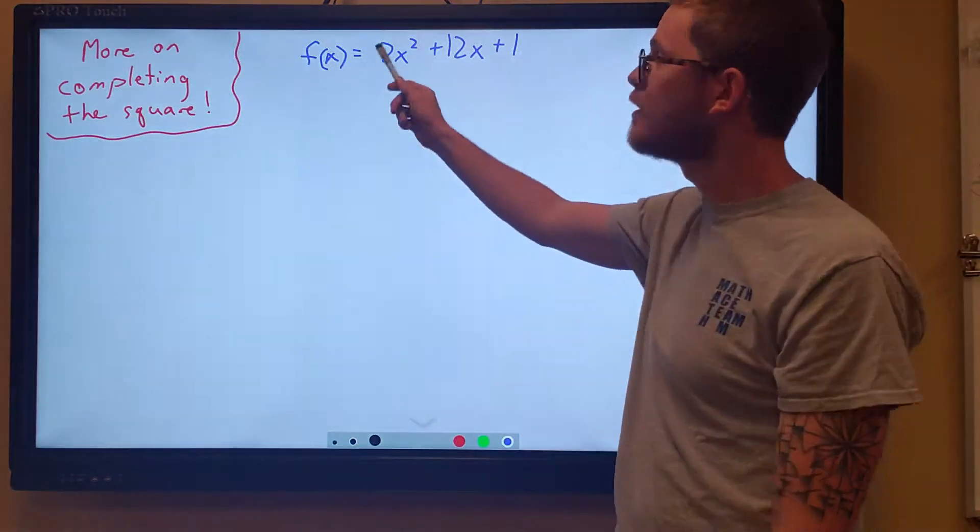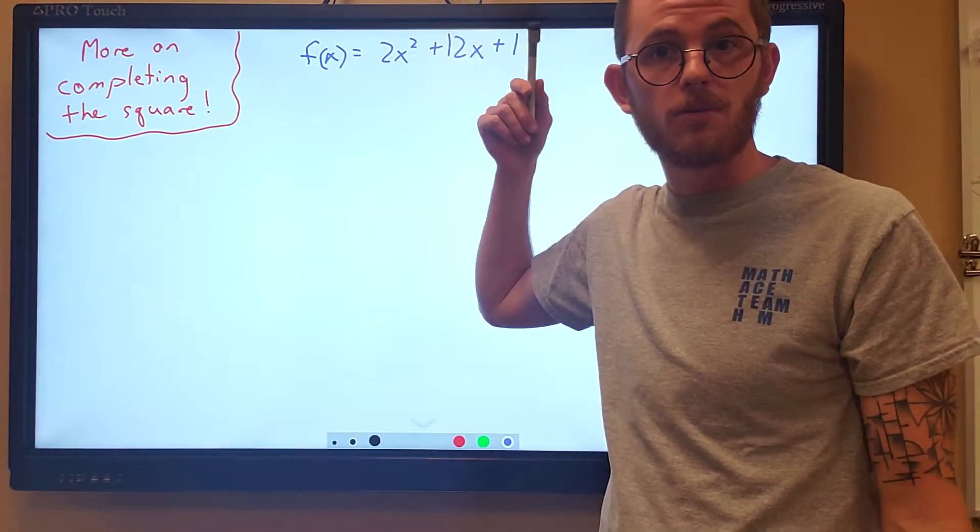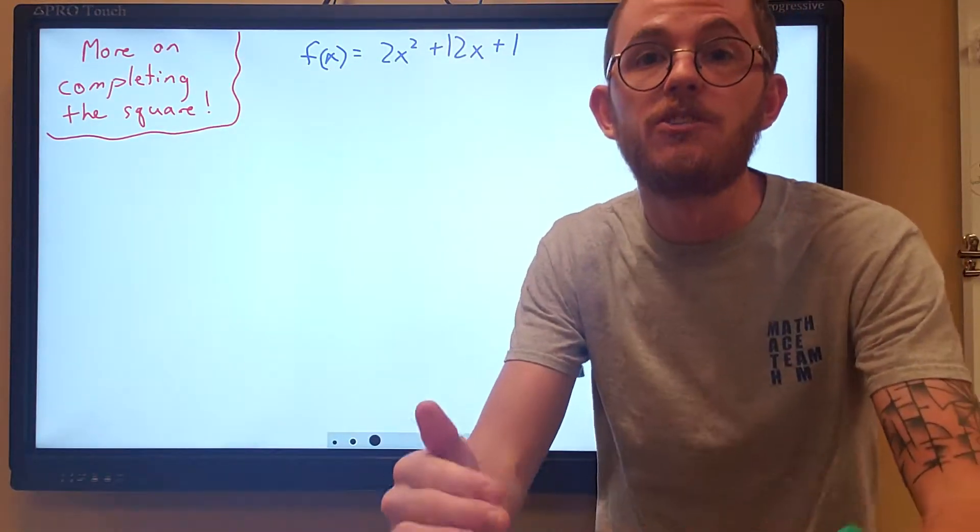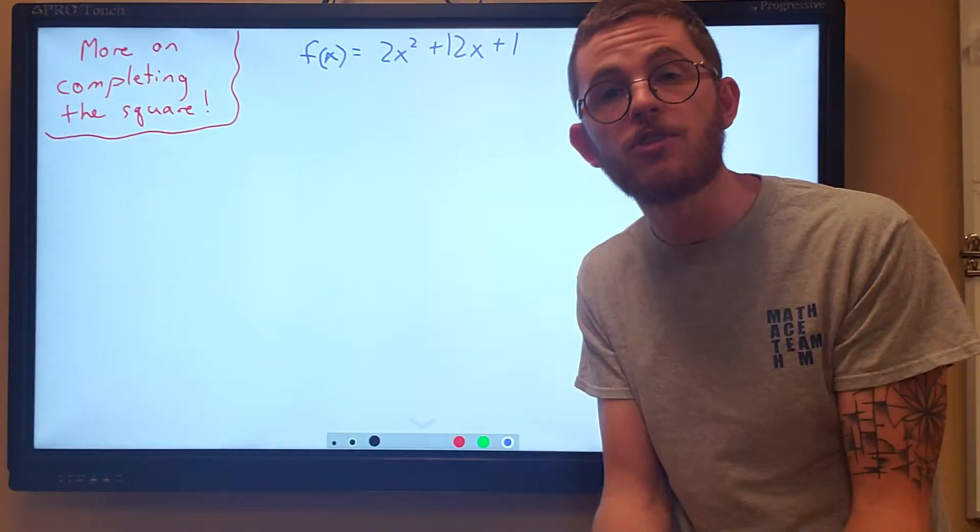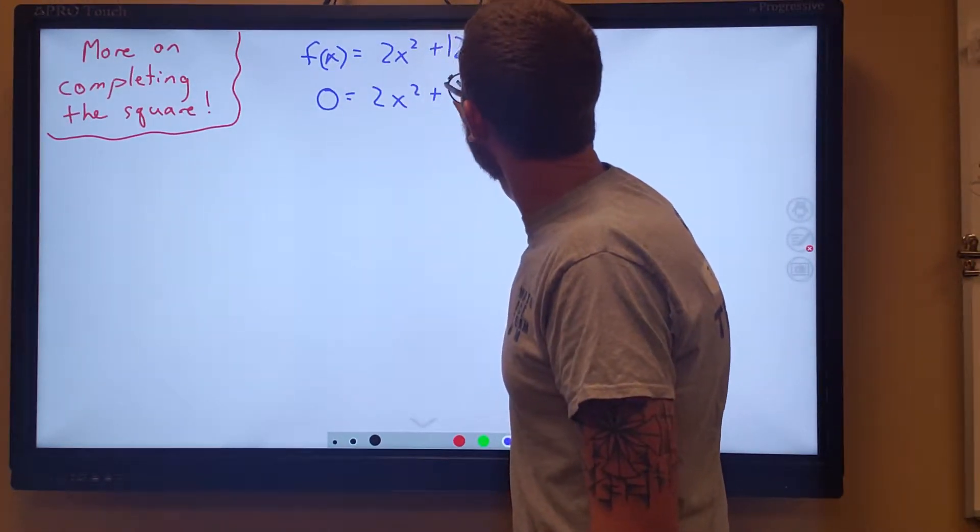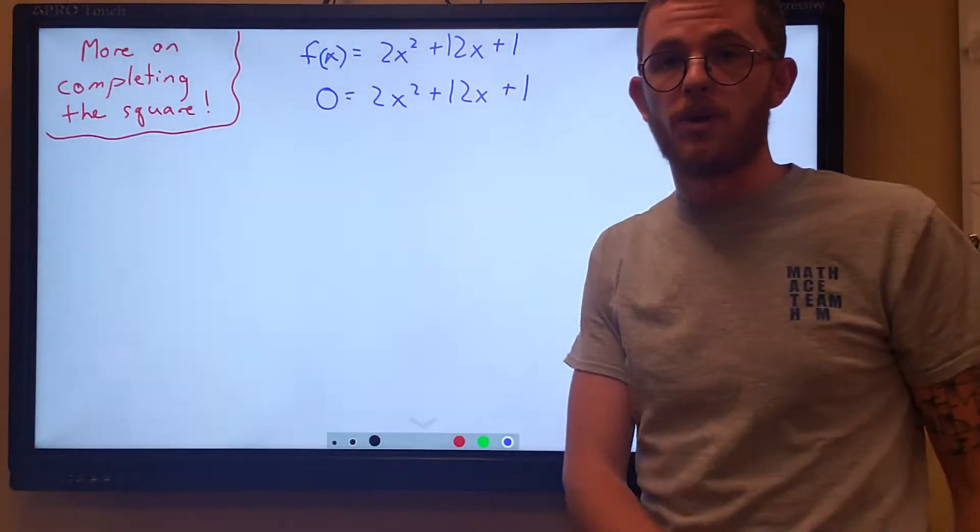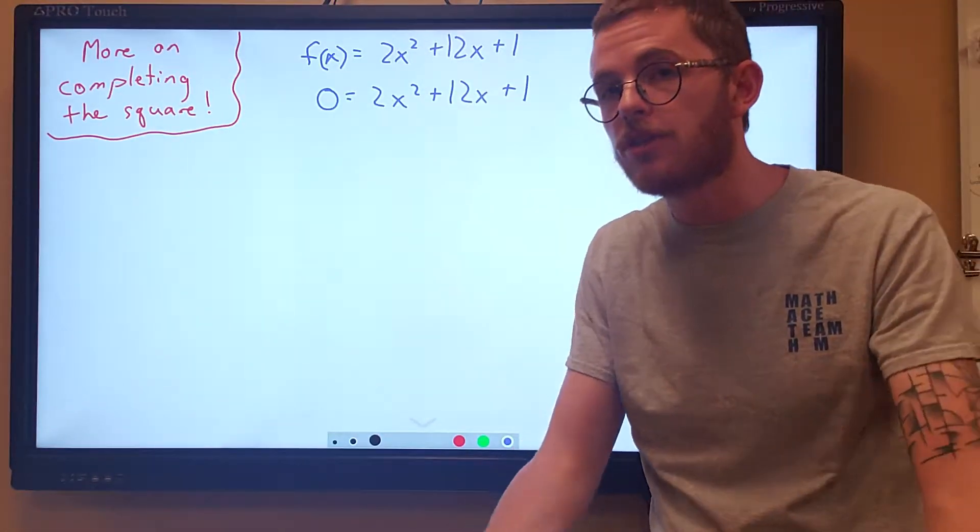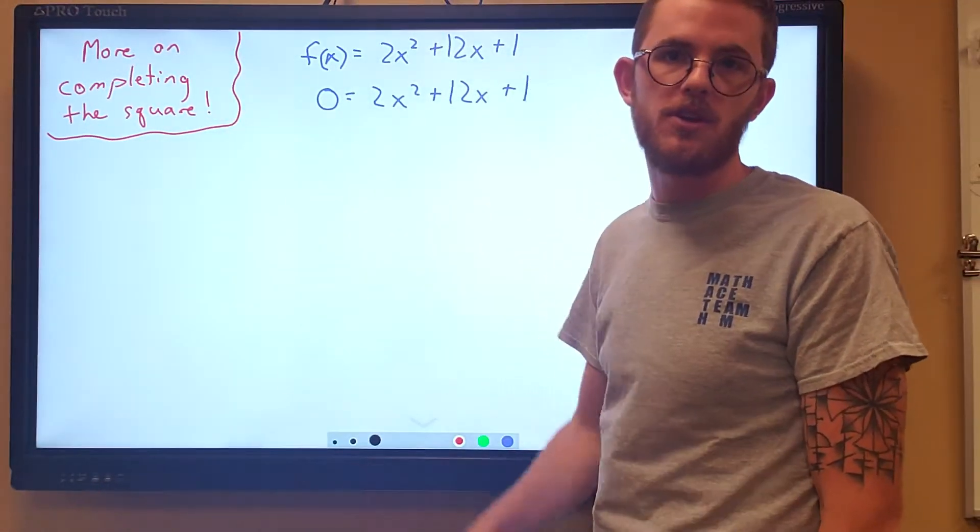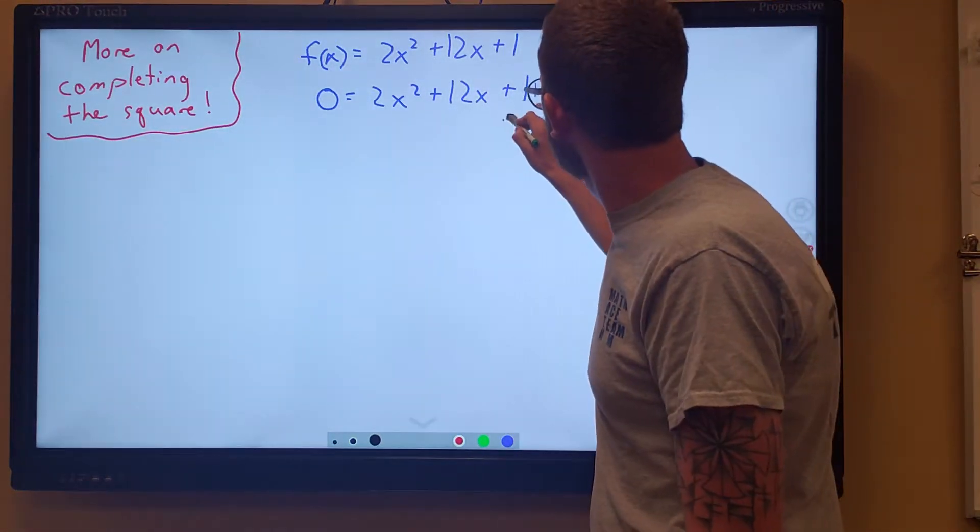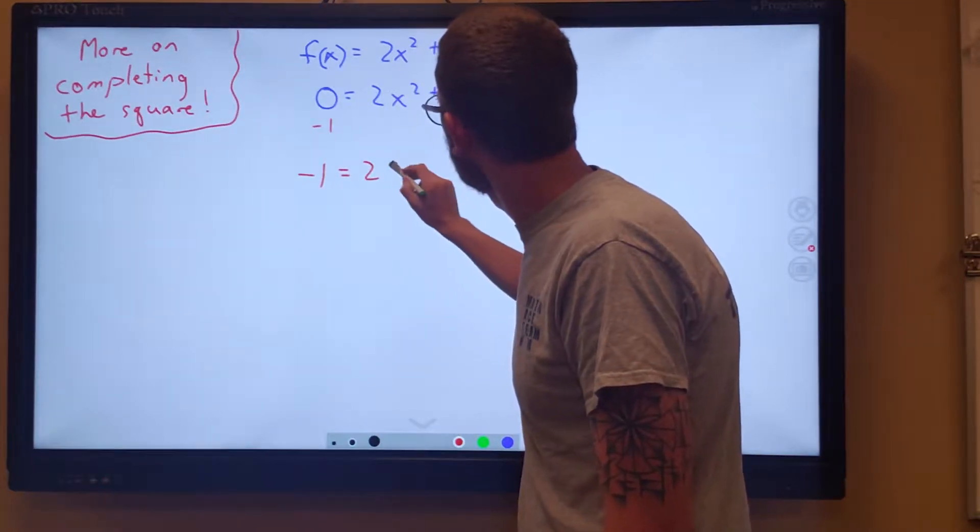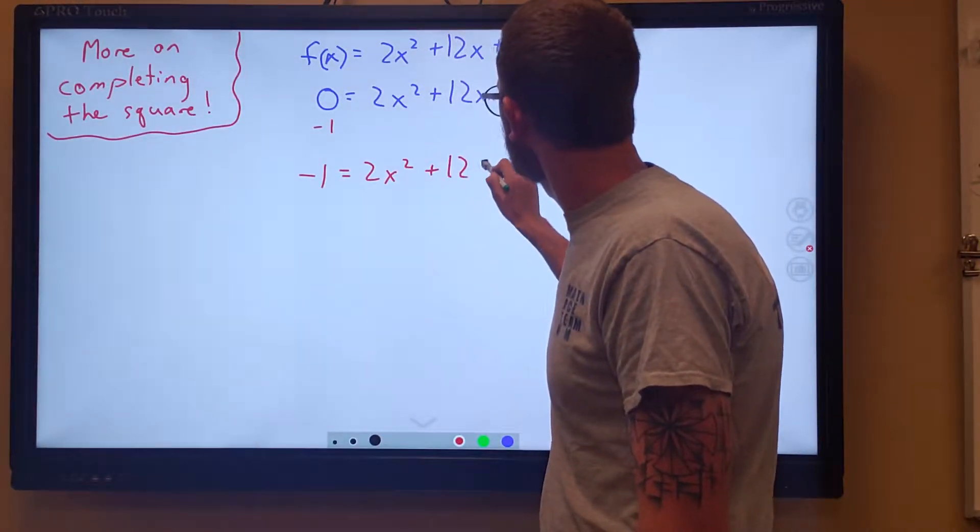We have to be able to deal with this when we have a leading coefficient like 2 right there. So if we're trying to solve a quadratic, we're trying to find zeros, solutions, x-intercepts, roots, we have to set our quadratic equal to 0 to begin with. But because we're trying to complete the square, it does make it a lot easier for us if we move our constant to the other side. So I am going to subtract 1 to give us negative 1 equals 2x squared plus 12x.